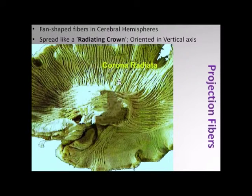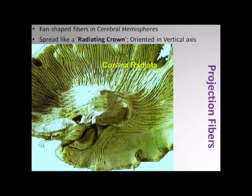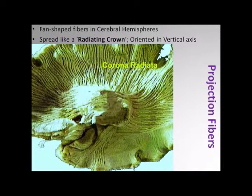Another example of a projection fiber. This is a dissection of a brain, and we can see this radiating fan-shaped structure here. This is a projection fiber which has been given a specific name called the corona radiata, radiating like a crown. So this is a projection fiber.